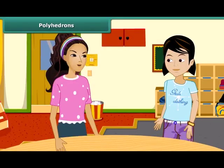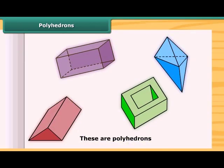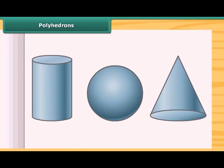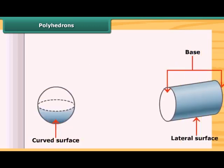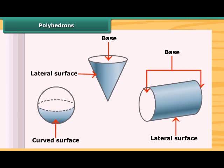Do you know what we call a solid having flat faces, edges, and vertices? Um, no. Those solids are called polyhedrons. These all solids are polyhedrons. Are these objects polyhedrons? No, these are not polyhedrons. You are right. These are not polyhedrons because they do not have flat faces.